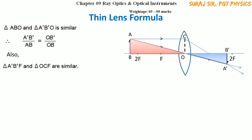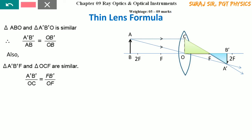We can take another pair of triangles: triangle A'B'F and triangle OCF. As highlighted on the screen, these two triangles are also similar — they share angle O, angle B' is 90°, and angle F is vertically opposite. So again, A'B' / OC = FB' / OF.